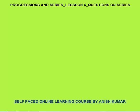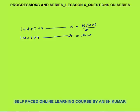First of all, I will discuss very basic series. You must know that 1 plus 2 plus 3 plus 4 — the sum of first n natural numbers — is always equal to n into n plus 1 by 2. For example, if you want to calculate the sum of first 20 natural numbers, the sum would be 20 into 21 by 2, that is 210.